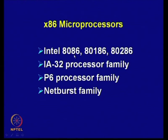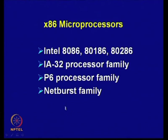Based on this success, subsequent processors were developed — the X86 series. Intel 8086 evolved into 80186, 80286 — all 16-bit processors. Subsequently, the IA-32 processor family was introduced by Intel, then the P6 Pentium-6 processor family, and subsequently the NetBurst family of processors, which we shall discuss in today's and the next lecture.